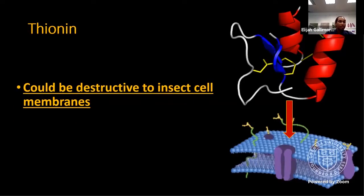So why thionin? Thionin was also down-regulated post-fall armyworm feeding. Unlike chitinase, this is a cysteine-rich pathogenesis-related protein and is more generally cytotoxic and has antimicrobial properties. It was selected based on its capacity to disrupt cell membranes, which could affect not just insect cells such as those of fall armyworms, but animal cells more generally.